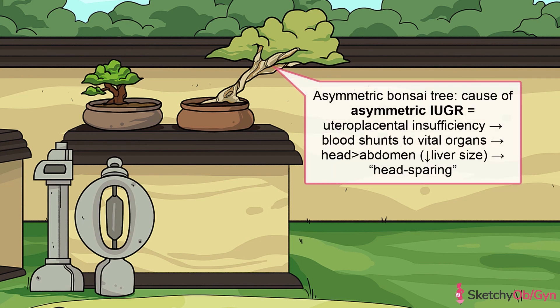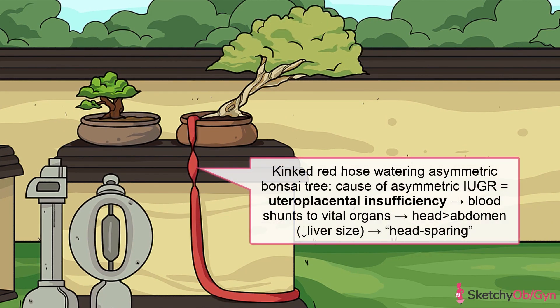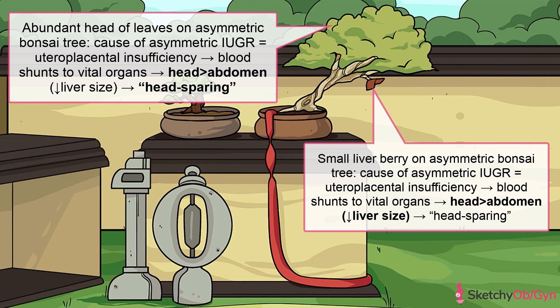Asymmetric IUGR, represented by this asymmetric bonsai tree, is the more common of the two types. It's also described as head-sparing because these fetuses have heads that measure within the normal range, but abdomens that don't. This happens because of decreased nutrition to the fetus, which can occur through poor maternal nutrition or poor perfusion to the placenta, symbolized by this kinked red water hose. Because the fetus has limited resources, it shunts its blood and nutrients to vital organs such as the brain and cardiovascular system, at the expense of visceral organs such as the liver. The liver is markedly smaller due to decreased glycogen storage, causing the abdomen to be proportionately smaller than the head, hence the asymmetry.